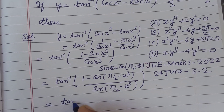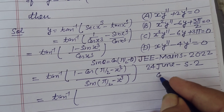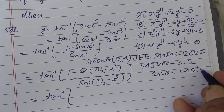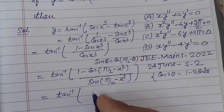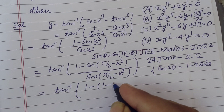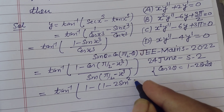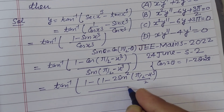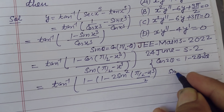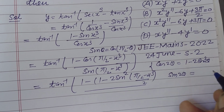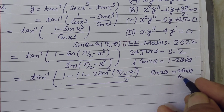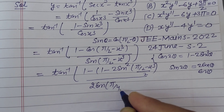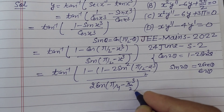Now using the identity cos 2θ = 1 minus 2sin²θ, we substitute: 1 minus cos(π/2 - x³) becomes 2sin²((π/2 - x³)/2). And using sin 2θ = 2 sin θ cos θ for the denominator, we put 2 sin(π/4 - x³/2) into cos(π/4 - x³/2).